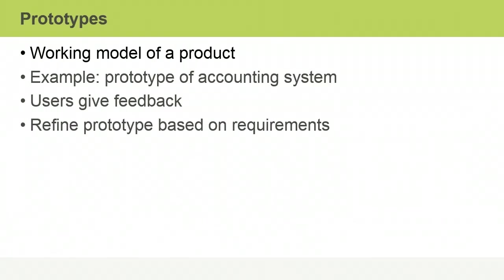A prototype is a working model of a product. You can create a prototype early in a project and let stakeholders use it to see how well it meets their needs. This is a much more concrete way to collect requirements than simply asking stakeholders what they need. Users give immediate feedback about the product as they use it, and the project team refines the prototype and lets the focus group test it again. Once it's clear the prototype meets all requirements, work on building the final product can start.